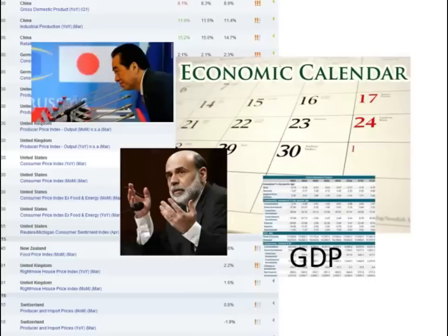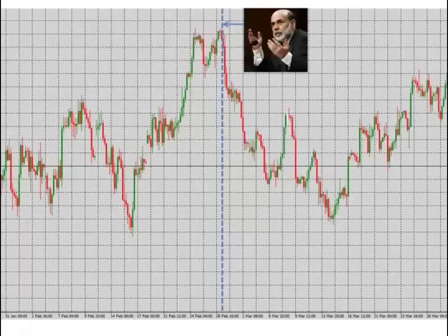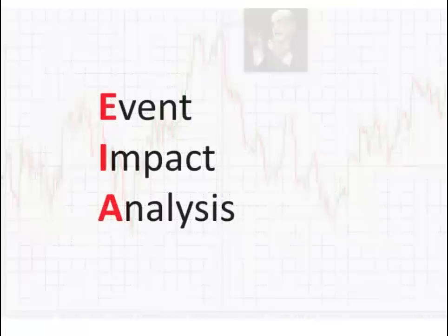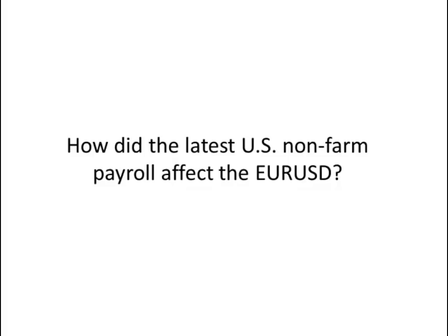There are also well-defined dates and times when certain economic data is made available to the public. These events that we know are going to take place may hold potential trade opportunities, depending on what types of instruments we hold. AutoChartist Event Impact Analysis is aimed at giving you a better understanding of how certain economic events impact certain tradable instruments. I'll refer to it as the EIA for the rest of this video.